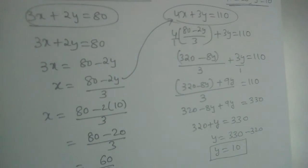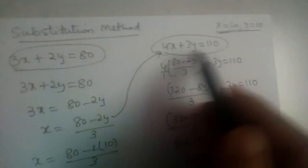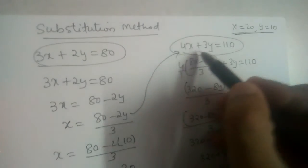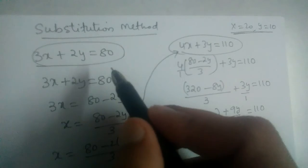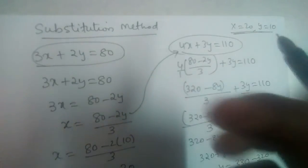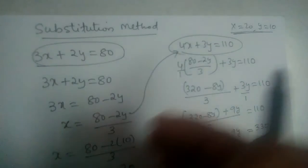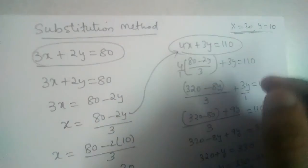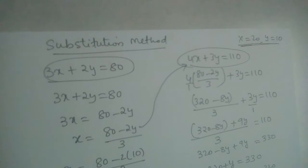So what is the substitution method? Take one equation from the two given equations — either the first or the second — find the value of one variable in terms of the other variable, substitute that value into the other equation, and simplify. That is the substitution method.